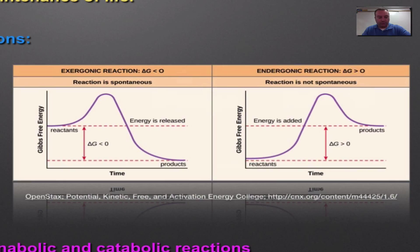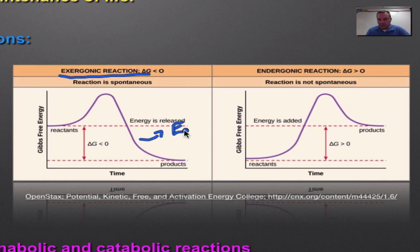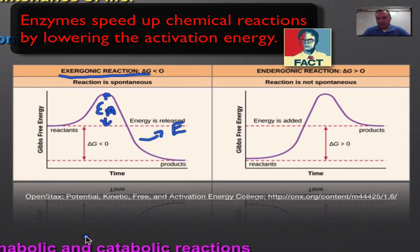Looking at the diagram: in an exergonic reaction the reactants have a decent amount of energy and the products have a lower amount of energy, so energy was released. There's a small hump which represents the activation energy — the energy required to get the reaction started. Exergonic reactions are typically spontaneous; they get started pretty easily and then off they go.